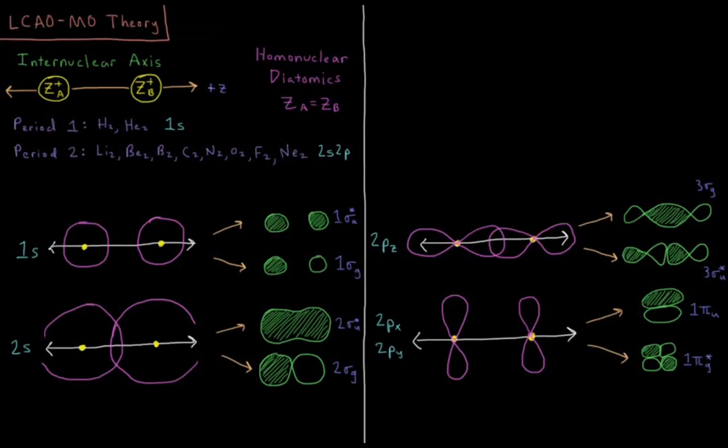This video will discuss the idea of the linear combination of atomic orbitals to form molecular orbitals theory for producing molecular orbitals. So we're going to start with some diatomic molecule here. We're particularly interested in homonuclear diatomics, diatomics where each nucleus is the same.